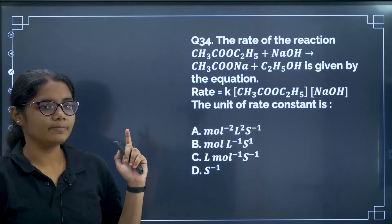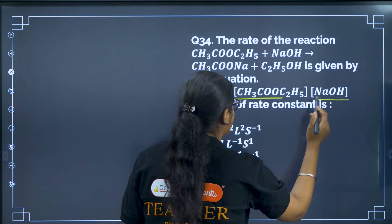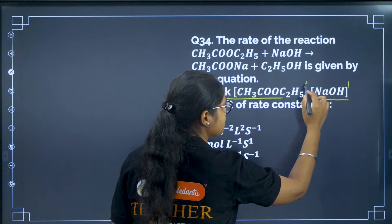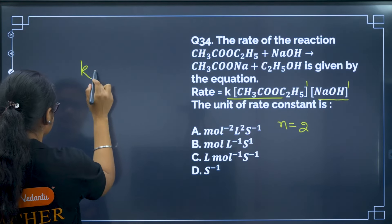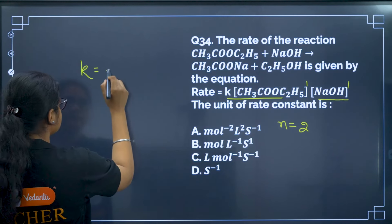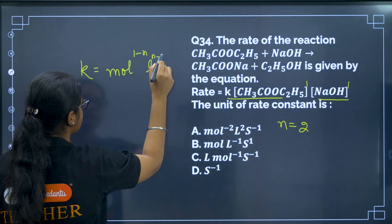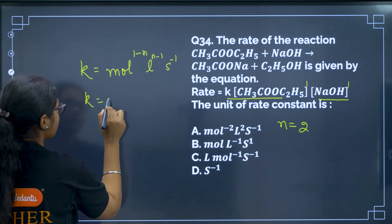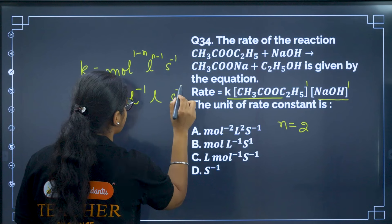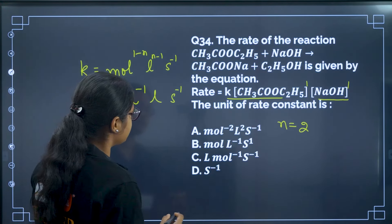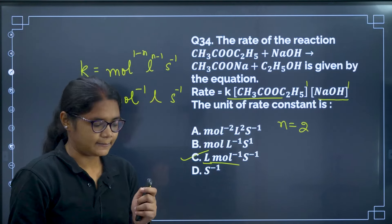Question 34: From chemical kinetics, the rate constant and rate law are given. It is a second order reaction (1+1), so N = 2. The general unit of K is mol^(1−N) · L^(N−1) · s⁻¹. For N = 2, K has units of mol⁻¹ · L · s⁻¹. The correct answer is option C.